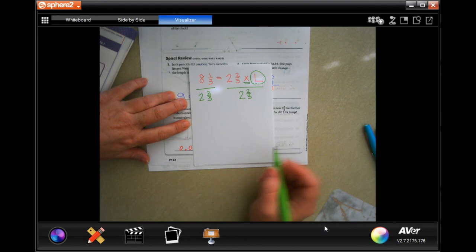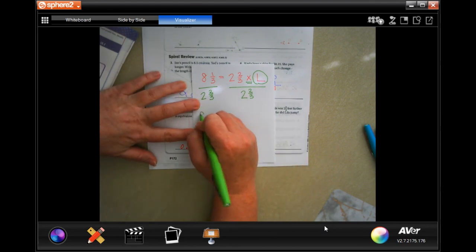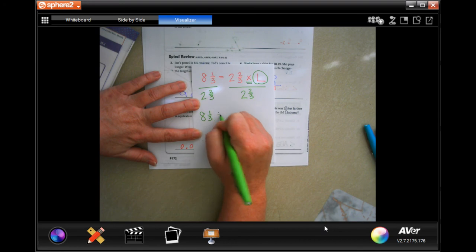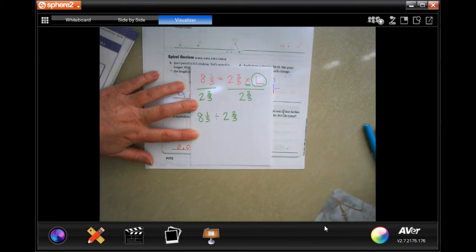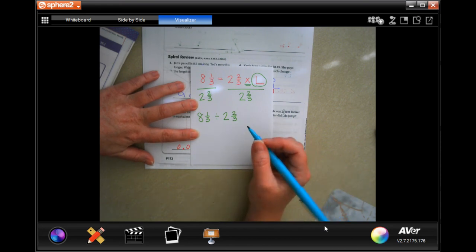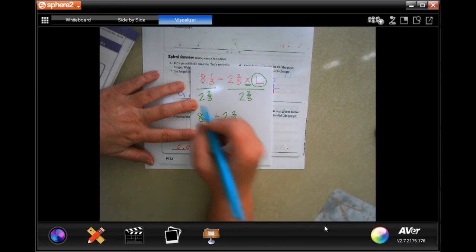So I have to divide it by 2 and 2/3. Now I have 8 and 1/3 divided by 2 and 2/3. Before I do the keep change flip, I'm going to turn them into dead men—we affectionately call this dead man because when you turn it to the side it looks like a dead man.